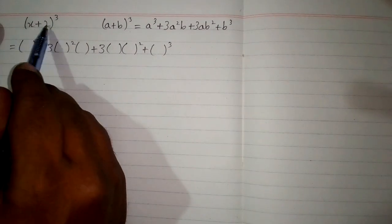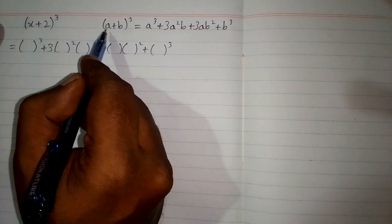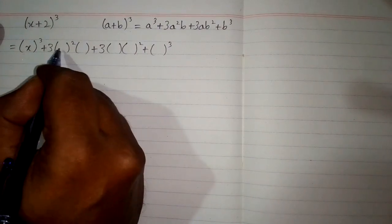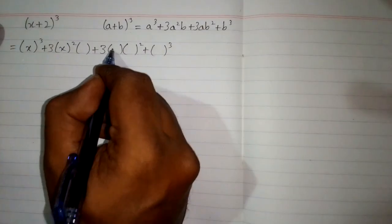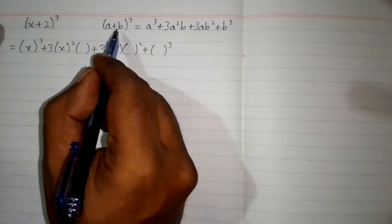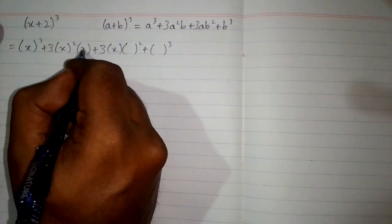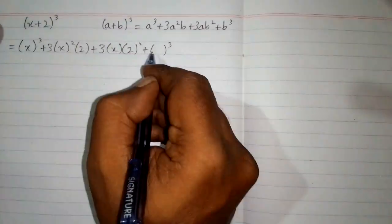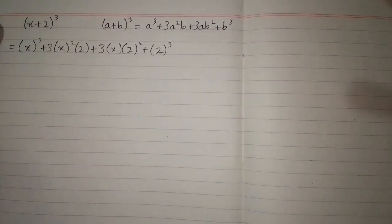Now we will put the values of a and b. The value of a is x, so we will put x in each place. And the value of b is 2, so we will write 2 in each corresponding position.